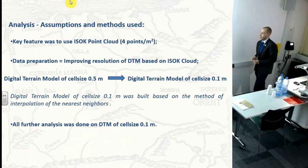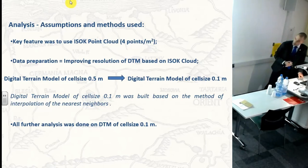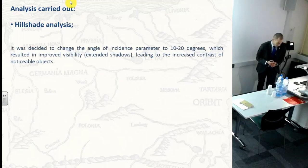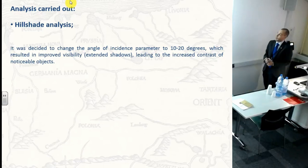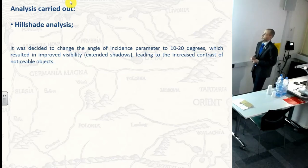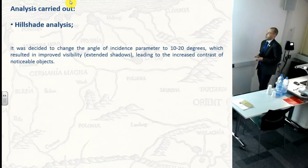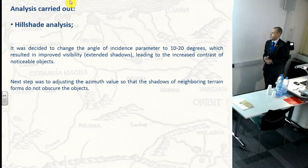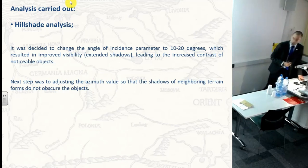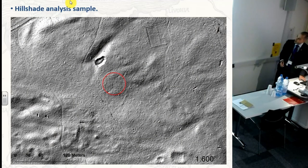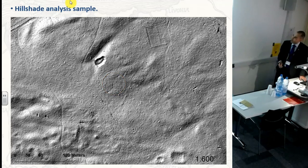We did a few analyses that I would like to show. The first was hillshade analysis. In ArcGIS we decided to change the angle of incidence parameter to 10 to 20 degrees, which resulted in improved visibility and extended shadows, leading to increased contrast of our objects. The next step was adjusting the azimuth values so that shadows of neighboring terrain forms do not obscure the object. Here we've got a sample — it's one of the circles you've seen before. It's more visible now — this is the new hillshade according to our new DTM model.